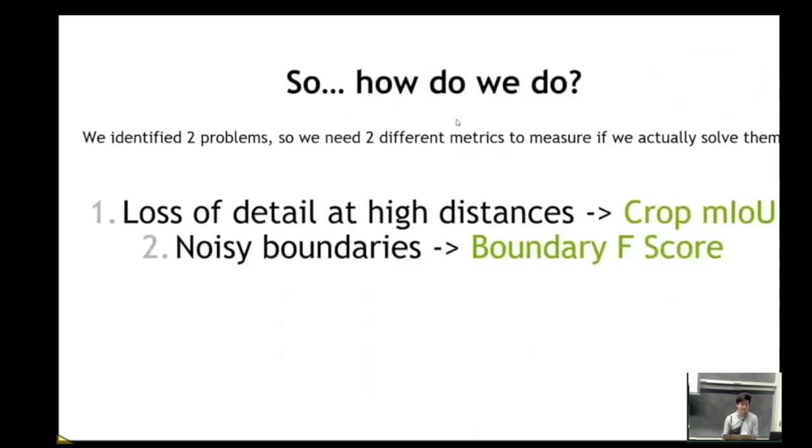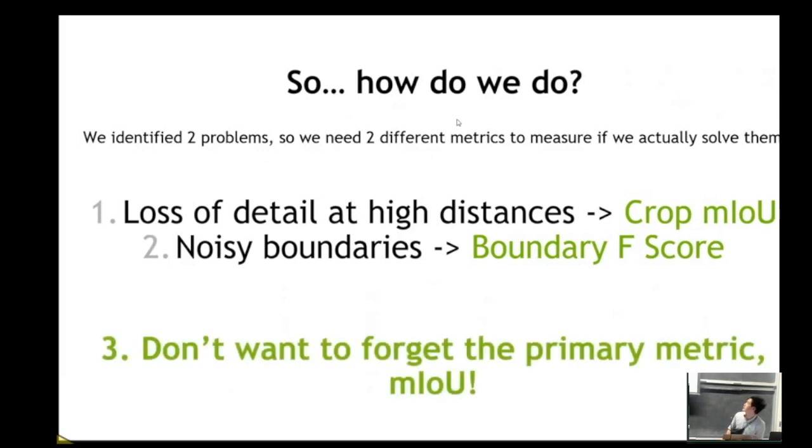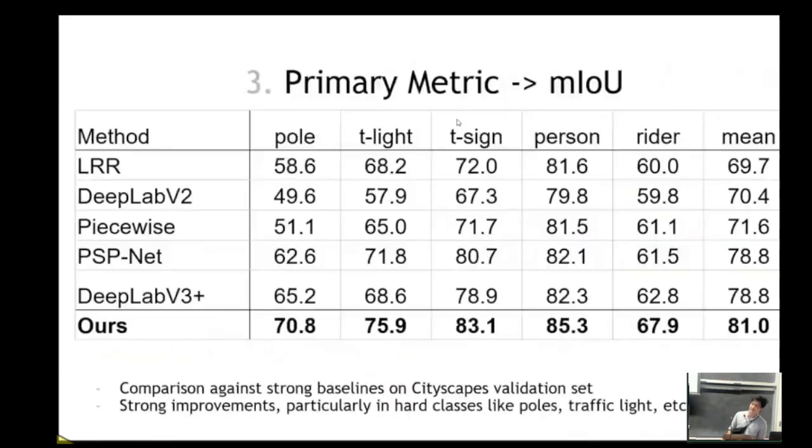And so we covered our two main metrics, but we don't want to forget about our main metric, which is just the primary metric, which is mean intersection over union on the actual segmentation maps. And we see here that even in our classical evaluation scheme, we get close to a two percent upgrade in mean intersection over union on the Cityscapes validation set.